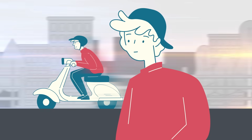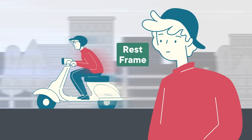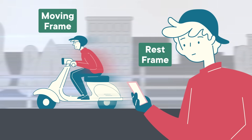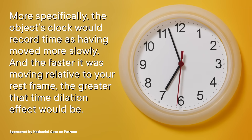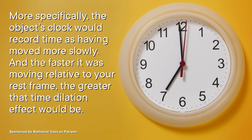These equations seemed to mathematically fix the broken laws of physics, but they led to a somewhat freaky side effect that every science fiction fan has heard of: time dilation. Basically, if you're standing still and observing a moving object — putting you in the rest frame and the object in the moving frame — you and that moving object wouldn't actually agree on how much time had passed. More specifically, the object's clock would record time as having moved more slowly, and the faster it was moving relative to your rest frame, the greater that time dilation effect would be. For our puny human minds that sounds like nonsense, but these Lorentz transformations did what they needed to: they could describe how electromagnetism worked in a way that matched observations, even if scientists couldn't explain why.